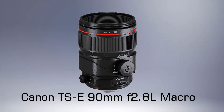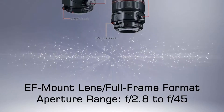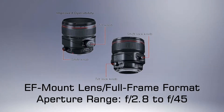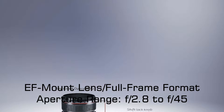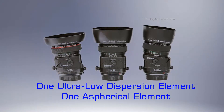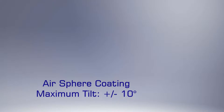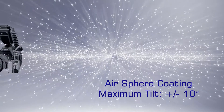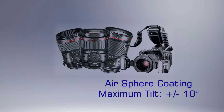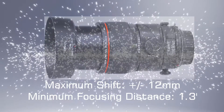Canon TS-E 90mm f/2.8L Macro Lens product highlight. EF-Mount lens, full-frame format. Aperture range: f/2.8 to f/45. One Ultra-Low Dispersion element, one aspherical element, Air Sphere coating. Maximum tilt: plus or minus 10 degrees. Maximum shift: plus or minus 12 millimeters. Minimum focusing distance: 1.3 feet. Maximum magnification: 0.5x.